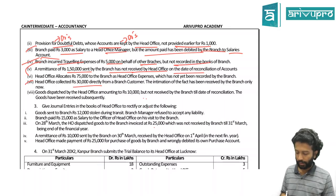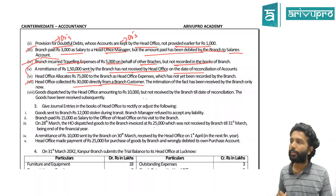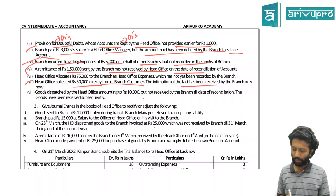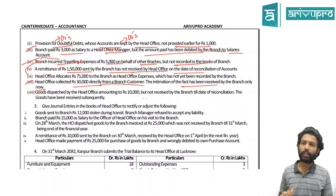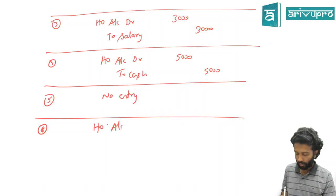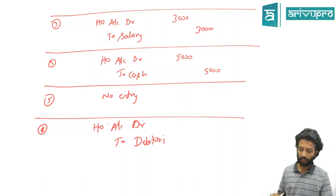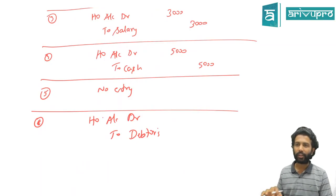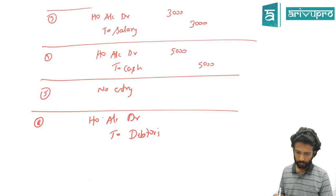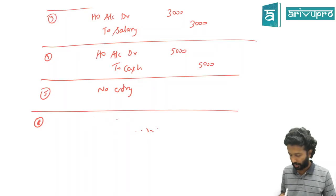Sixth scenario: HO collected 30,000 directly from branch customer with no prior intimation to branch. Entry in branch books: HO Account debit to Debtors Account 30,000. Debtors belong to the branch, so when HO collected cash from them, branch must reduce debtors and record HO as the recipient.